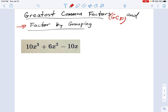This should be review, but just to warm you guys up at the start of a polynomial unit, it's a good idea to go over factoring. So I have here a polynomial, this trinomial, 10x³ + 6x² - 10x, and I want to find a greatest common factor for it.